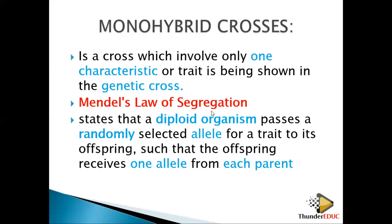Individuals during meiosis are supposed to segregate — they are supposed to divide — so that the offspring must receive one allele from the male parent and one from the female parent. These gametes are formed during the process of segregation.